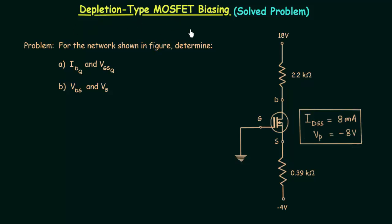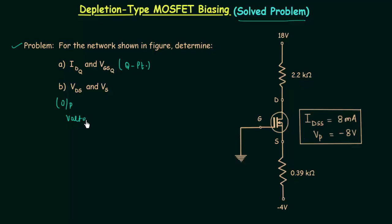We have completed depletion type MOSFET biasing and before starting the biasing of enhancement type MOSFET we will quickly solve one problem. In this problem there are two parts. In part A we will find IDQ and VGSQ, which are the coordinates of the operating point. In part B we will find VDS, which is the output voltage, and VS, which is the potential at the source terminal.